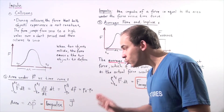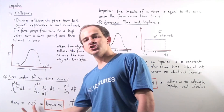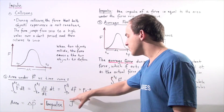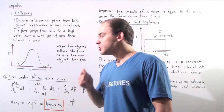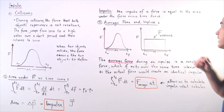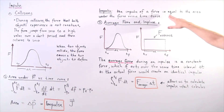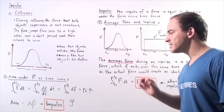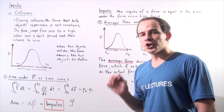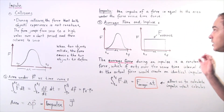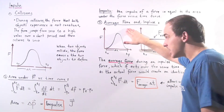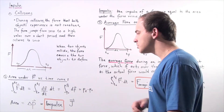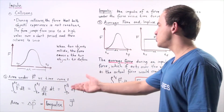Impulse has the same exact units as momentum because it equals the change in momentum of our object. It is commonly represented with the capital letter J, and the vector symbol on top means impulse is a vector, just like momentum. So the impulse of a force during a collision of two or more objects is equal to the area underneath the force versus time curve — equivalently, impulse is simply the change in momentum of our object during the collision.